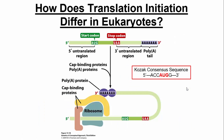How does translation initiation differ in eukaryotes? Instead of the Shine-Dalgarno sequence, eukaryotes have something called a Kozak consensus sequence. The messenger RNA also has a lot of secondary structure — it forms loop structures during eukaryotic initiation. The ribosomal complex interacts with CAP binding proteins as well as the poly-A tail on the eukaryotic messenger RNA. All of this helps stabilize the initiation complex, which is different from prokaryotes.